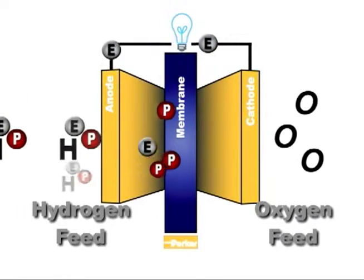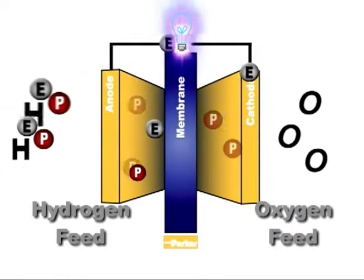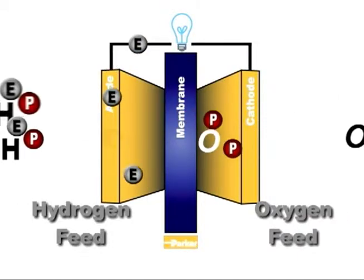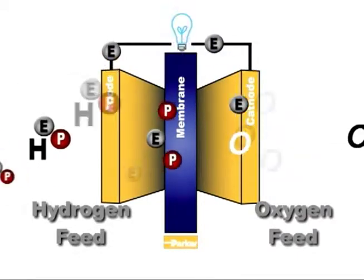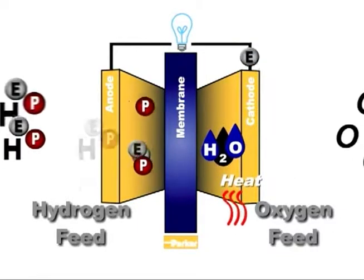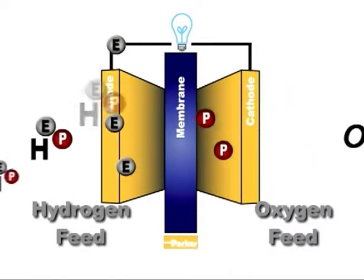At the oxygen side of the cell, the protons that have crossed through the membrane combine with oxygen and those electrons that have passed through the load to create water molecules. This completes the electrical circuit.